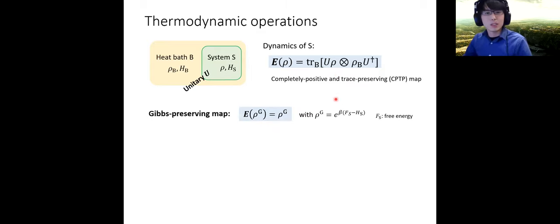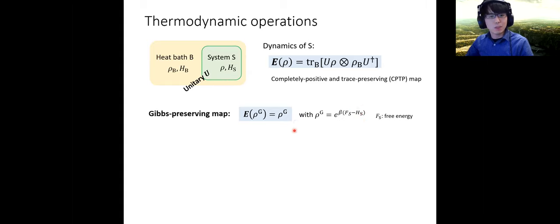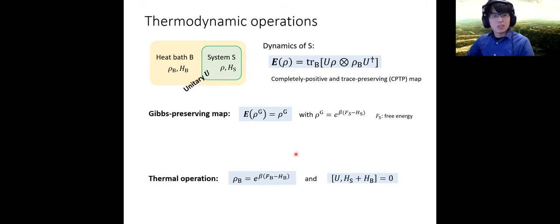We need to specify some thermodynamic properties of this kind of dynamics. The first important class is called Gibbs-preserving maps. Here, rho_Z is the Gibbs state of the Hamiltonian of system S, and the Gibbs-preserving map means that the Gibbs state doesn't change under such a map. This is a very natural assumption: if we look at a relaxation process where there is a system and a very large heat bath, we can expect the Gibbs state doesn't change. In that sense, this is the most naive and natural characterization of thermodynamic processes.